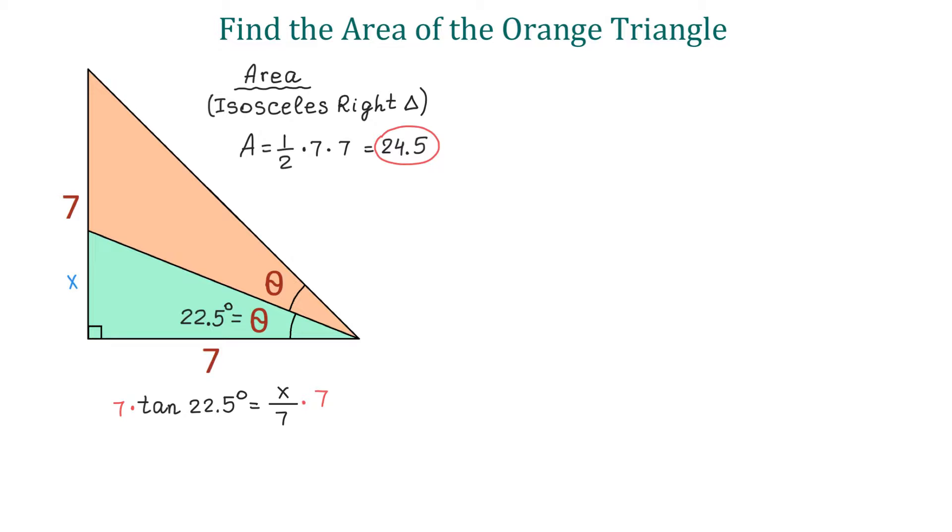Then, on the right side, 7 and 7 will cancel. Then, x equals 7 tangent of 22.5 degrees. And this is approximately 2.9 units.